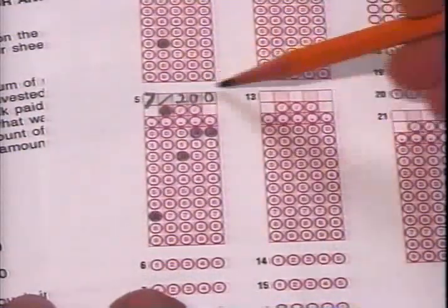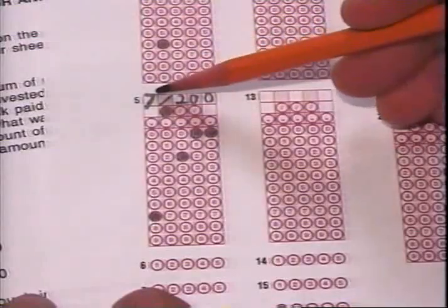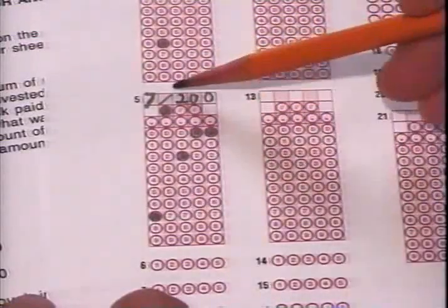The fraction is written out across the top of the standard grid, and one circle is filled in below each numeral or symbol.